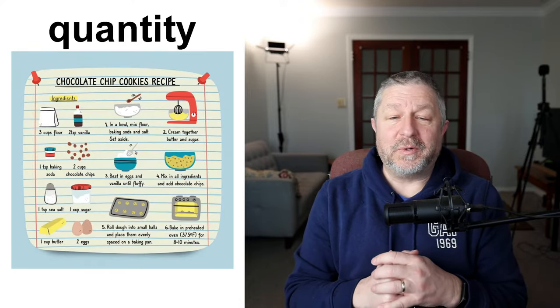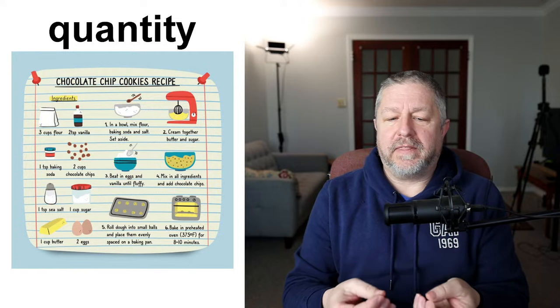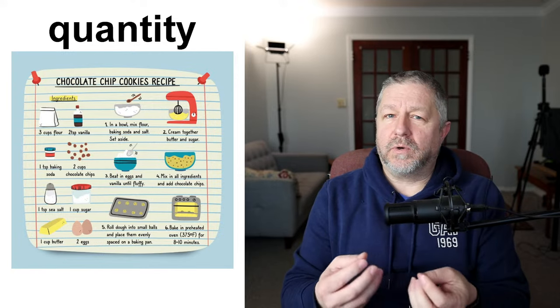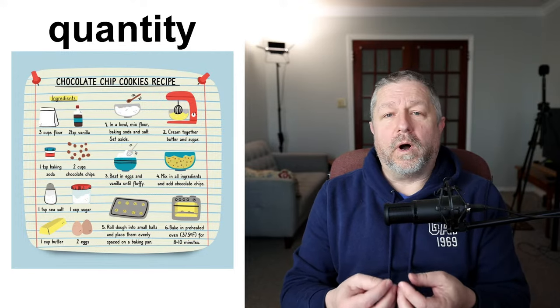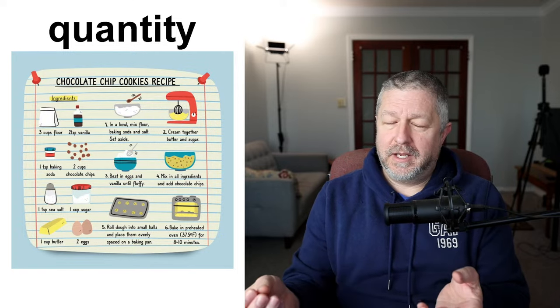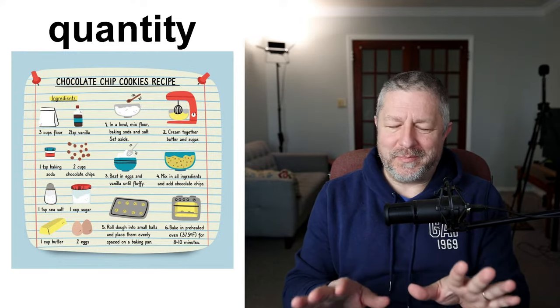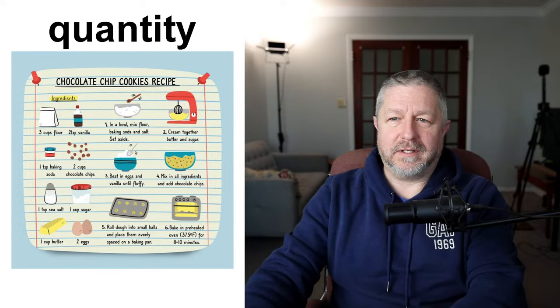We're going to start by talking about quantity. When you measure the quantity of something, the first thing I think of is if you are going to make something in the kitchen. You need different quantities of different ingredients. One way to get those quantities would be to weigh things, but in my part of the world, because I'm just an amateur cook or baker, I generally just measure things. I don't weigh my flour or my sugar — I actually use things like this.